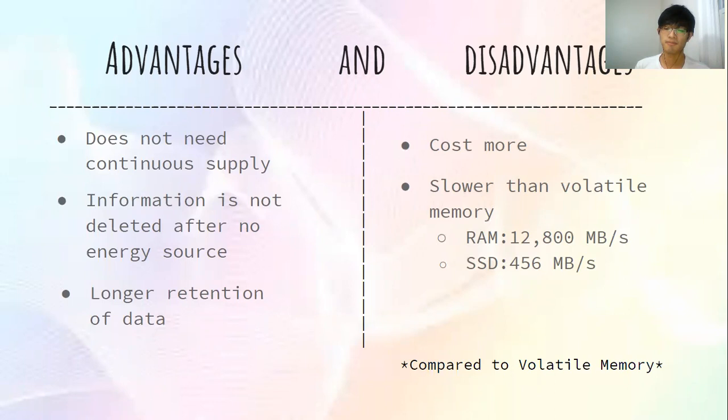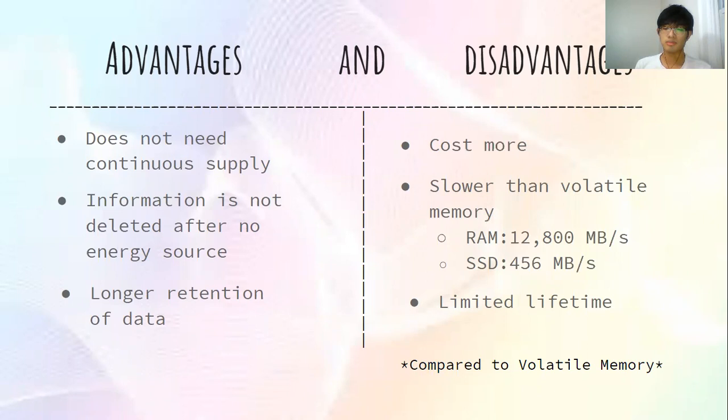So why do we still use non-volatile memory over volatile memory? Non-volatile memory is used as a secondary storage system, while volatile memory is used as the primary storage. This is because volatile memory is faster and RAM-based, while non-volatile memory simply stores data after RAM powers off.